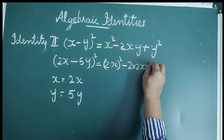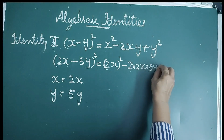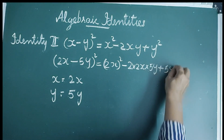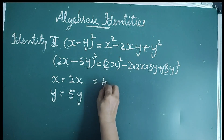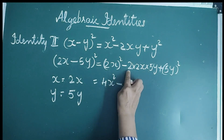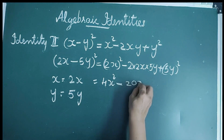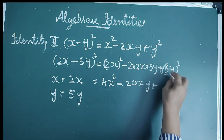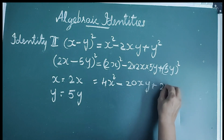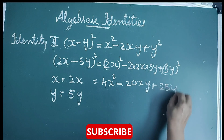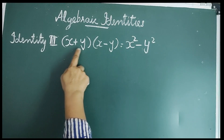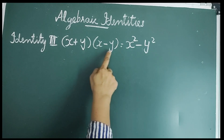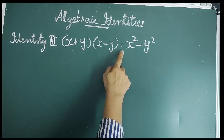Continuing: plus (5y)². That equals 4x² − 20xy + 25y². The third identity is (x + y)(x − y) = x² − y².